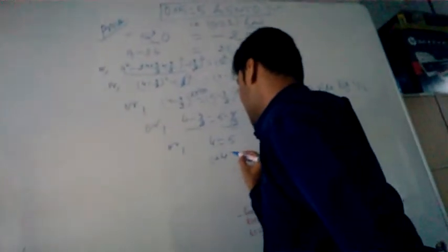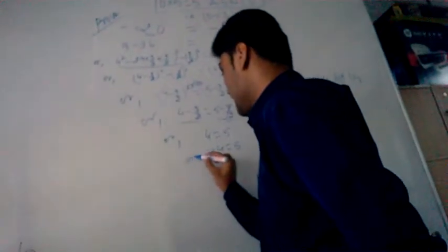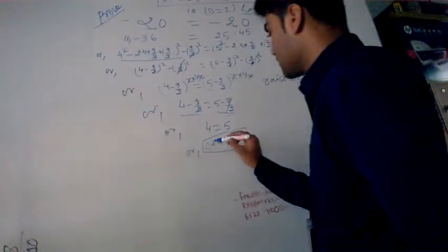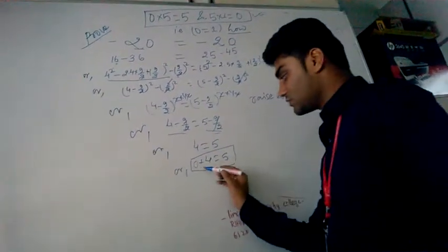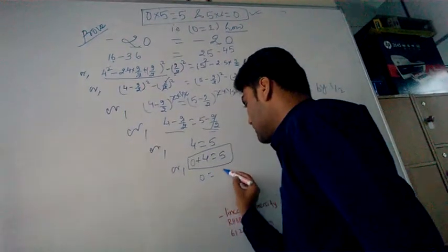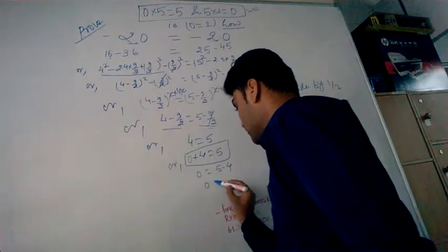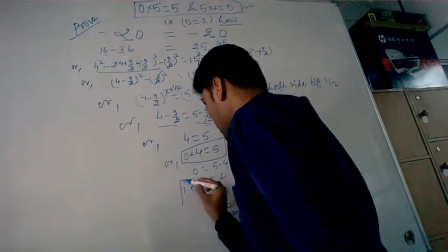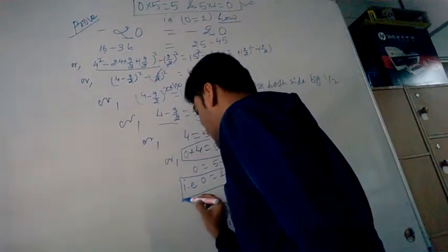We can write it 0 plus 4 equals to 5. If we add any number with 0, this becomes same number. So, no difference. So, now, 0 equals to how much? 5 minus 4. That is, 0 equals to 1. Here, 0 equals to 1. It's proved.